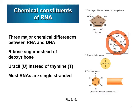Let's refresh our memory from the introductory class where we talked about differences between RNAs and DNAs. There are three major chemical differences. The first: RNA has ribose sugar whereas DNA has deoxyribose. The second difference is uracil in RNA instead of thymine in DNA. The third main difference is that most RNAs are single-stranded, as opposed to DNA being double-stranded.